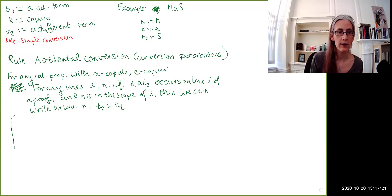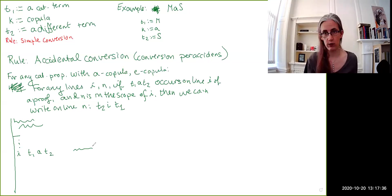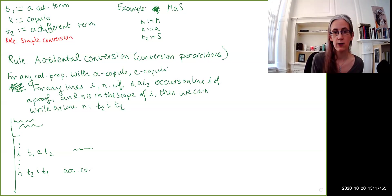And the annotation for this is going to be accidental conversion citing line I. So, again, to write it schematically, here's our scope line. We've got various things going on up here. We don't necessarily know what. We've got various lines, and then we come to line I in our proof where we have something of the form T1, A, T2. Again, with some annotation. We don't know what, and it doesn't matter. We can then, on a later line, that is still within the same scope, swap the order of the terms, change the copula from the universal to the partial, and this is going to be accidental conversion applied to line I.